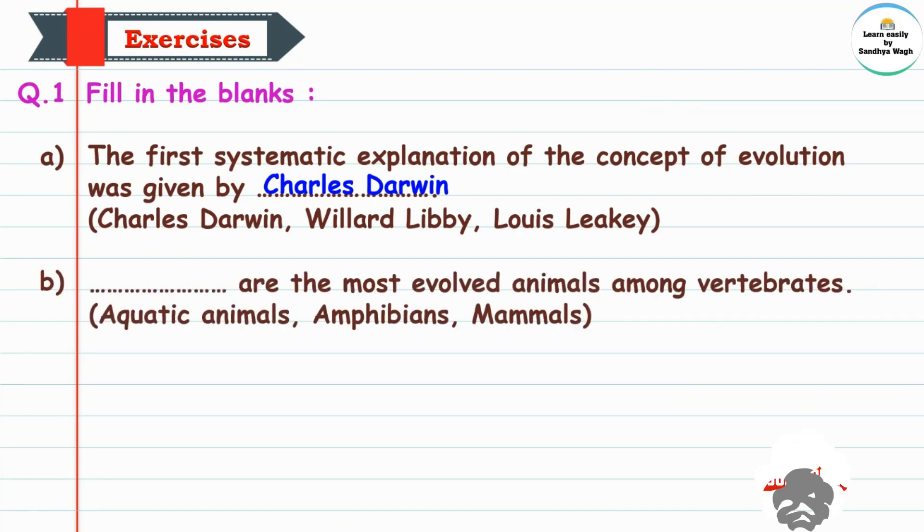Next is: blank are the most evolved animals among vertebrates. Evolved means developed gradually. And vertebrate means animals which have a backbone are called vertebrates.